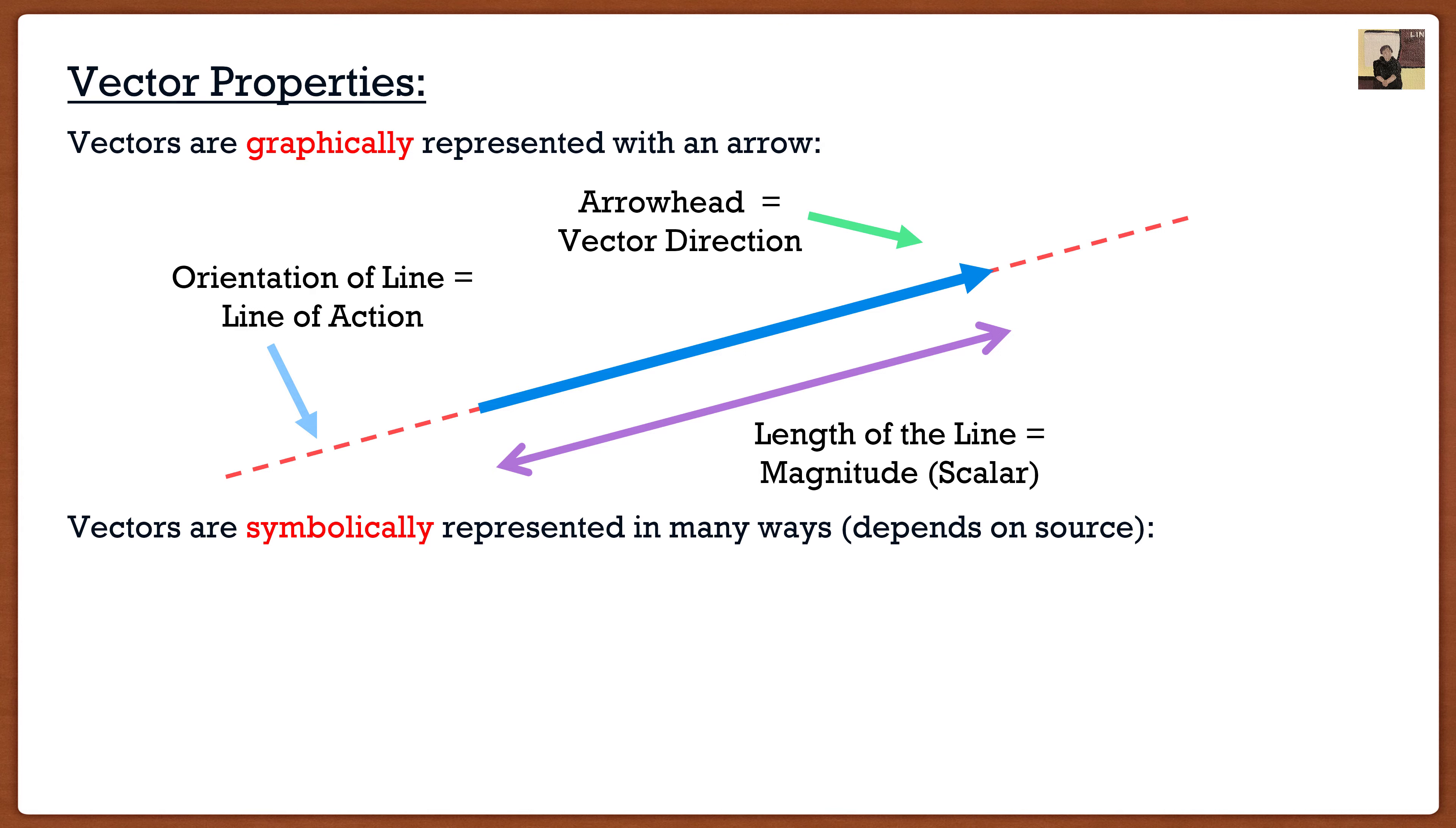Vectors are symbolically represented in many ways. It depends on the source, but all in all, they look very similar in the end. The most typical thing you'll see is that a vector will be bold. Most textbooks have it as bold. In addition, most textbooks have something over the top of the vector. So you either see a straight line, a half arrow, or a full arrow over top. If we're talking about the magnitude of a vector, which is a scalar, it's going to have the same symbol as the vector, but with absolute value signs around it. This is actually nice because magnitudes are always positive.